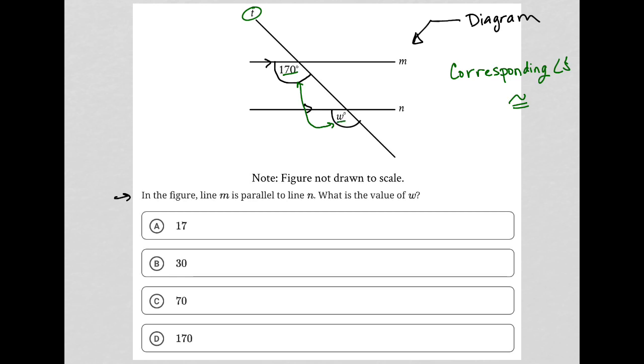170 and W are corresponding angles, which means W is 170 degrees because congruent means that they are equal in size and shape.